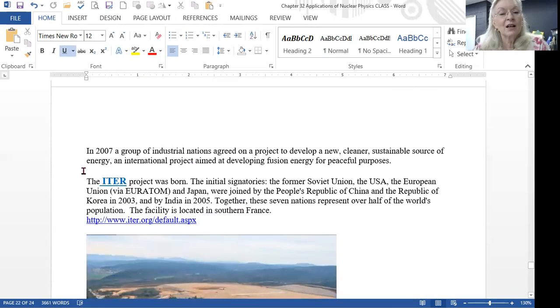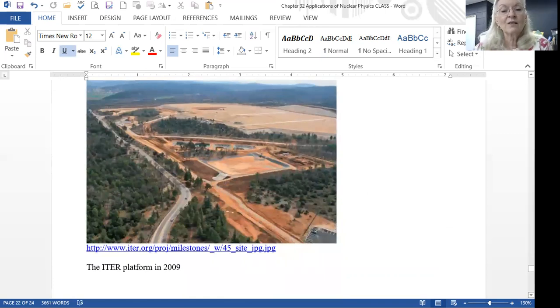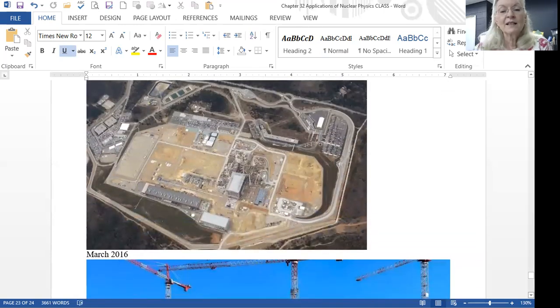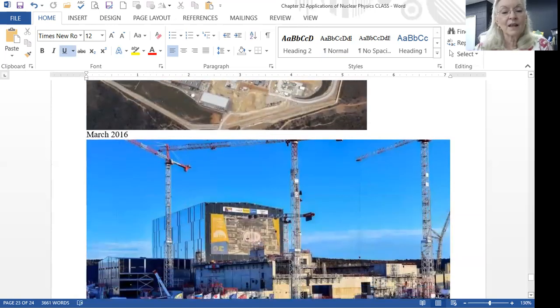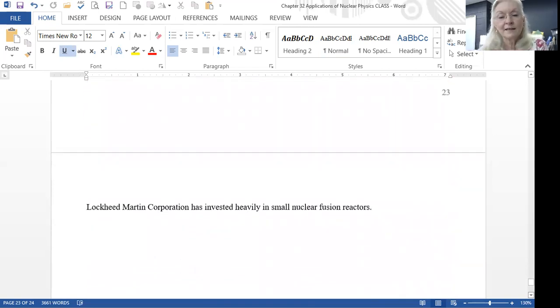In 2007, a group of nations got together to create the ITER project. The facility is in southern France and they've made progress. Although it's slow, it's a really large endeavor. You can see in 2009, it looked like an open field. In 2016, there were some buildings. In 2018, more buildings. They are making progress. The real instance is that right now, it takes more energy than you get out of it for fusion to take place.